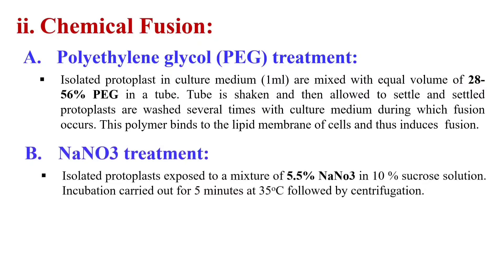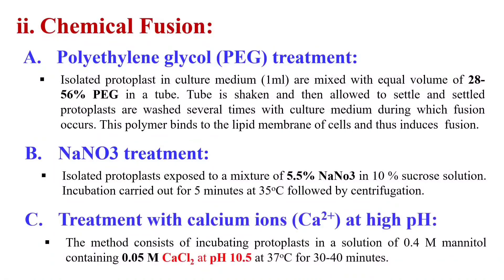The next chemical is NaNO3, that is sodium nitrate. The isolated protoplasts are exposed to a mixture of 5.5% NaNO3 in 10% sucrose solution. Incubation is generally carried out for 5 minutes at 35°C, followed by centrifugation. The protoplasts in the pellet are kept in a water bath for 30 minutes at 30°C, during which fusion takes place.